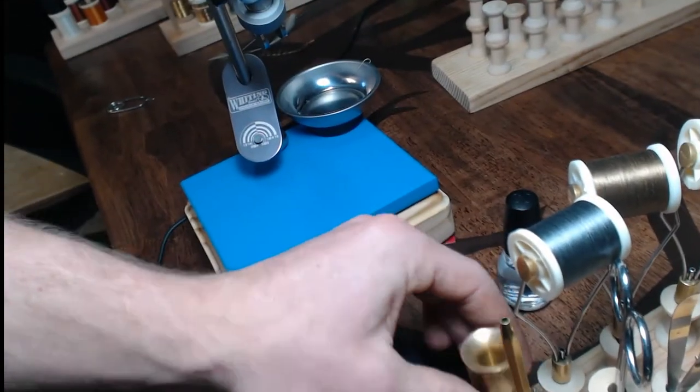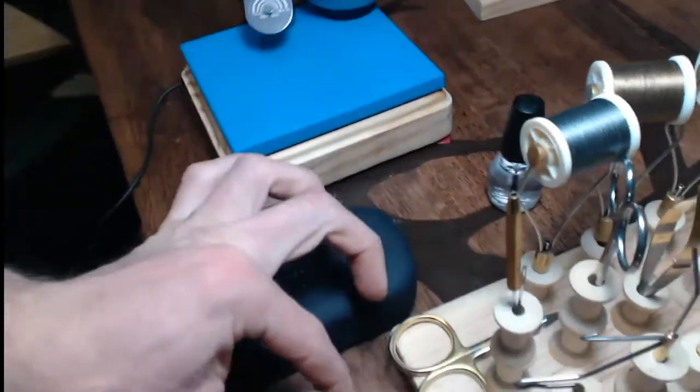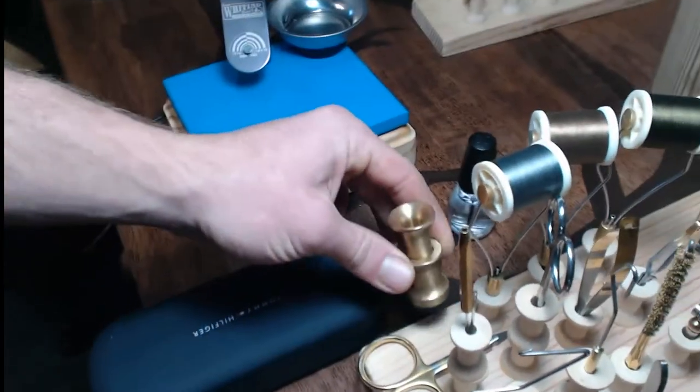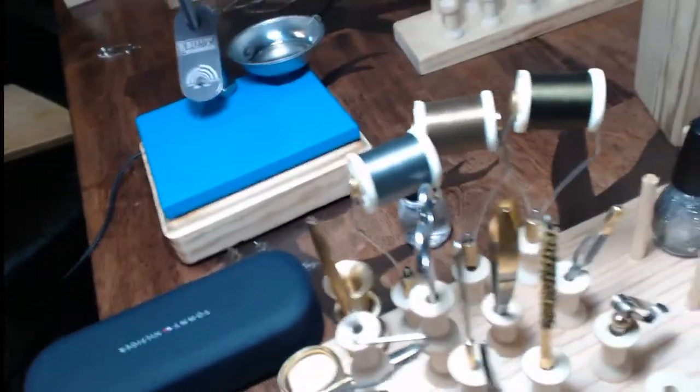A hair stacker. You put the hair in it and you beat it on the table and it straightens them all up. It's a two-piece so it comes apart and you can grab all the fibers and they're nice and straight.